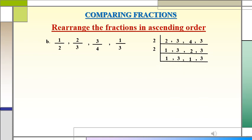Now let's divide by 3. Bring down 1. 3 times 1 is 3, so write down 1, bring down 1. Again, 3 times 1 is 3, so write down 1.